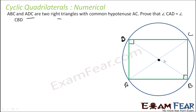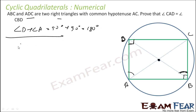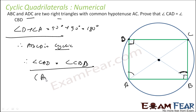It is given that angle D plus angle B equals 90 plus 90, that is 180 degrees. That means ABCD is cyclic. If ABCD is cyclic, they lie on a circle. Both angles ACD and DBC are subtended by the same chord CD. Therefore, angle CAD and angle CBD are equal by the angles subtended by the same chord.